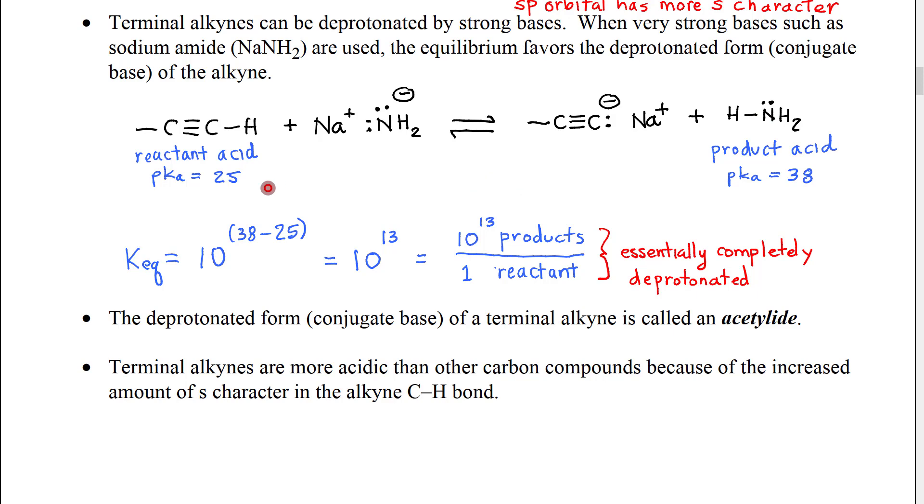we can use the pKa's of these species to calculate K equilibrium for this reaction. K equilibrium is equal to 10 to the product acid pKa minus reactant acid pKa. So our product acid is ammonia with a pKa of 38. Our reactant acid is acetylene, or actually a terminal alkyne with a pKa of 25.